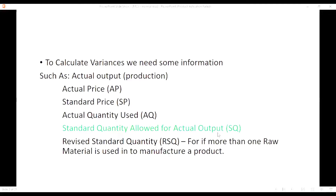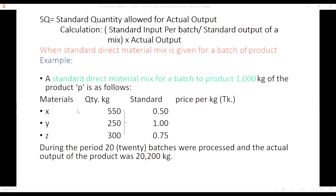If standard output is given excluding normal loss, then no extra calculation is needed. Here is a problem. Input of X is 550 kg, Y is 250 kg, and Z is 300 kg, totaling 1,100 kg. But standard output was given as 1,000 kg for a mix, so there is a normal loss of 100 kg. The normal loss is already adjusted here, so no extra calculation is needed.